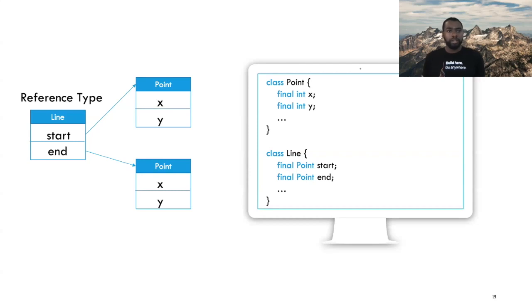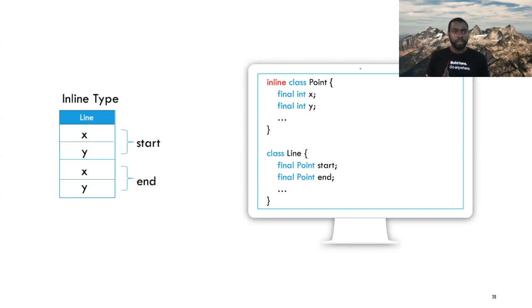Here is a little illustration. Let's say we define a Point with two fields x and y, and we define a Line with two point fields start and end, just as in our previous example. The layout would look something like this in today's world. But if you convert Point to an inline type, instead of the disjointed layout, we have a contiguous layout. The two points are placed inline within the line object, which means better footprint and better cache locality. Also, the two point fields do not have identity, which means they can benefit from better optimizations by the JVM.